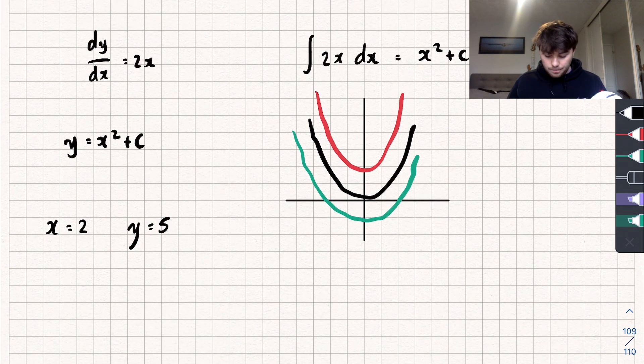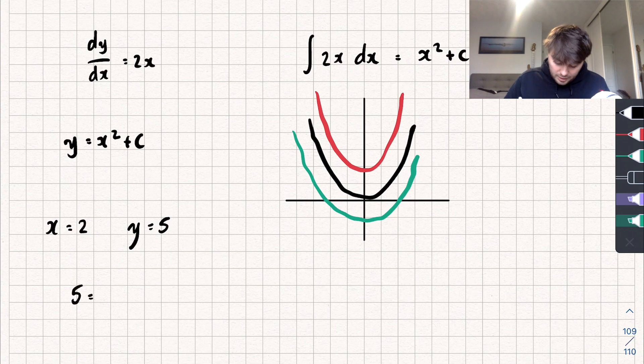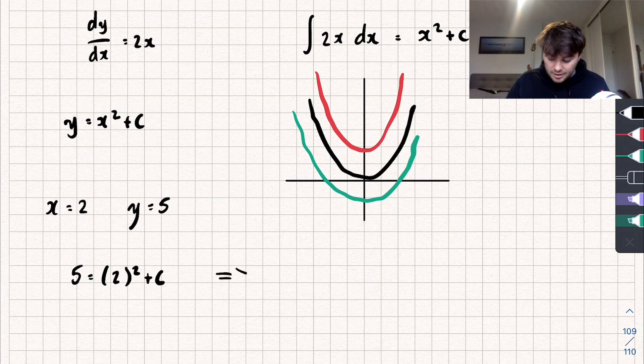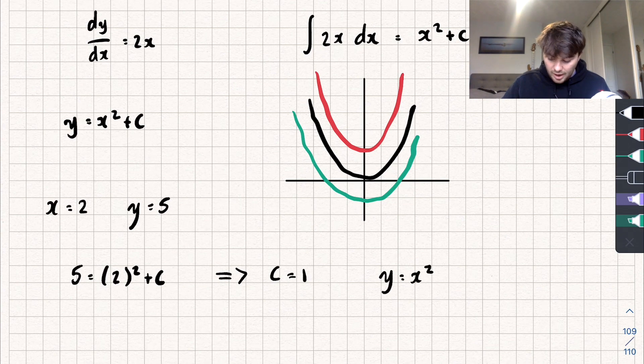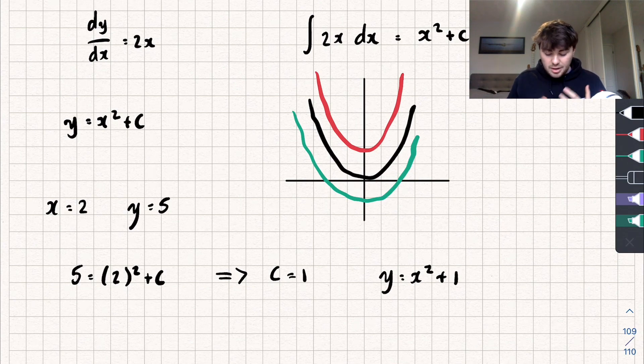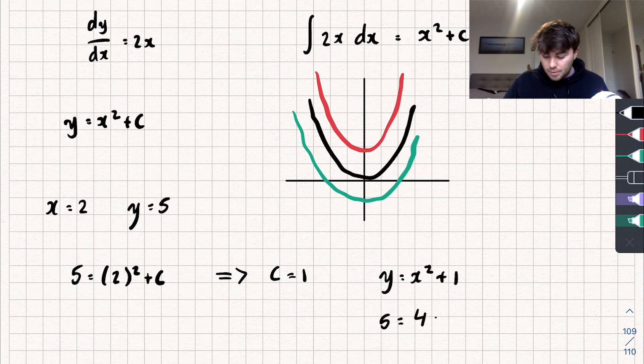If we do that we get 5 equals 2 squared plus c. Rearranging for c we get that c equals 1. So we get the particular solution y equals x squared plus 1. This will meet our initial values. If I substitute in x equals 2 and y equals 5, we get 5 equals 2 squared which is 4 plus 1, 5 equals 5, it works.